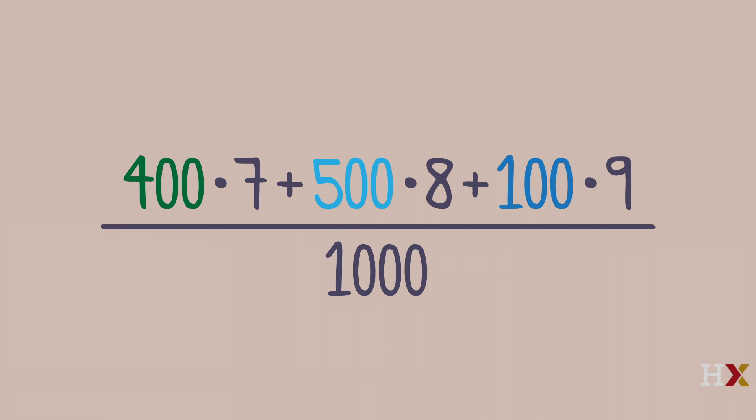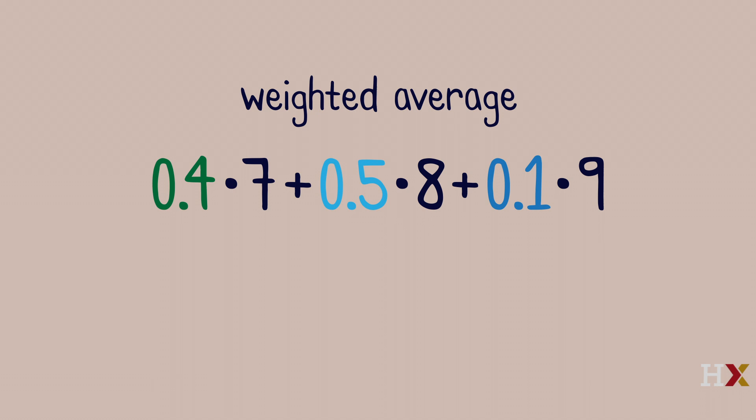The simple average of these outcomes can be written as a weighted average of the possible scores. The weights, 0.4, 0.5, and 0.1, are non-negative numbers that add up to 1.